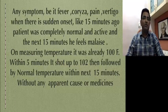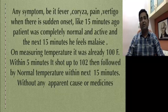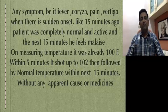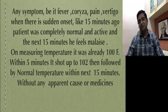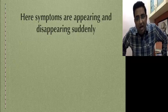If we take the next example — any symptom, be it fever, coryza, pain, or vertigo — when there is a sudden onset: 15 minutes ago the patient was completely normal and active, and in the next 15 minutes he felt malaise. On measuring temperature it was already 100°F. Within 5 minutes it shot up to 102°F, then followed by normal temperature within the next 15 minutes — but this was without any apparent cold or medicines. So here you find the symptoms appearing and disappearing suddenly.